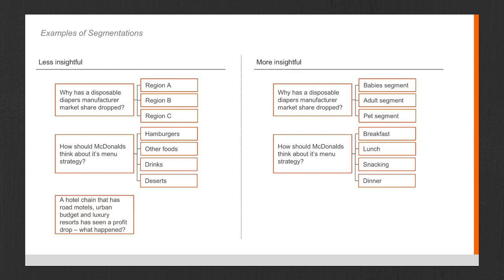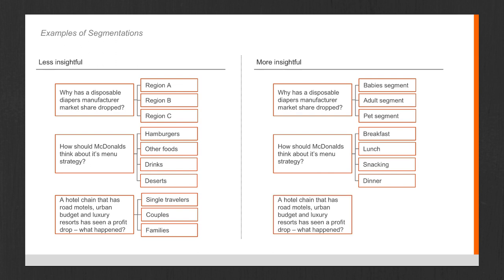Third example: a hotel chain that has road motels, urban budget hotels, and luxury resorts has seen a profit drop — what happened? A less skilled candidate would segment by single travelers, couples, and families. A more insightful way is right under your nose: segment into road motels, urban budget hotels, and luxury resorts. You can then see if the profit drop occurred in all of them or just one. They're different businesses that happen to fall under the same hotel chain, and you can think of them separately.